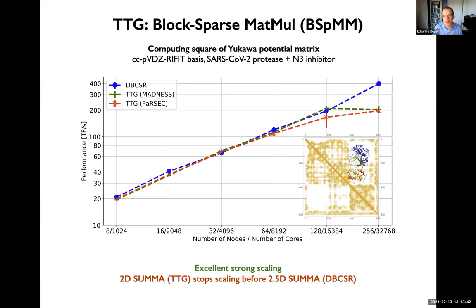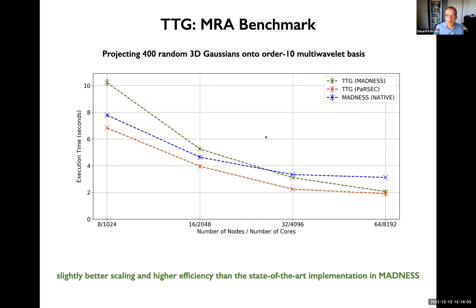For block sparse matrix multiply, a similar story: we're competitive, but eventually we run out of work because we're implementing an inferior algorithm relative to state of the art, which is the DBCSR library from ETH Zurich. But until then, we're competitive with it. Finally, an MRA benchmark computing the MRA representation of 400 randomly placed Gaussians — our objective is to beat the state-of-the-art Madness implementation, which we do. The strong scaling is not particularly great, but this is not the latest data, and we have room to improve in load balancing.